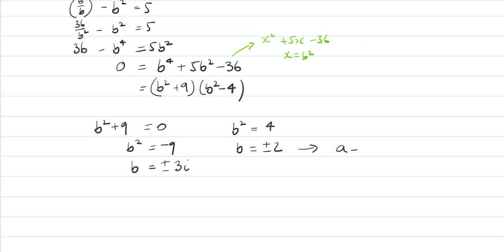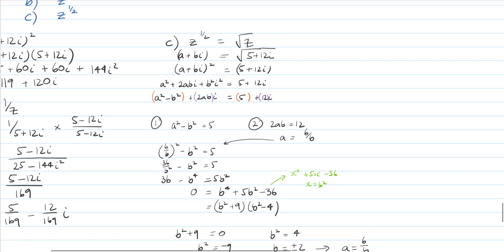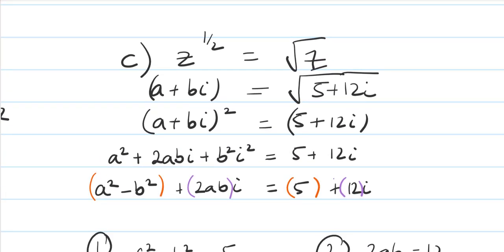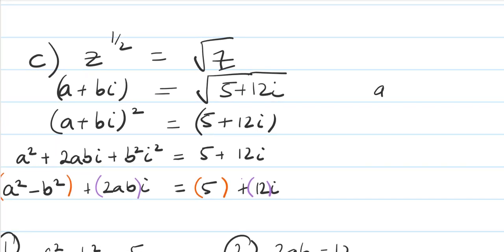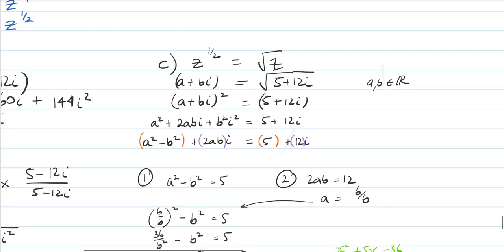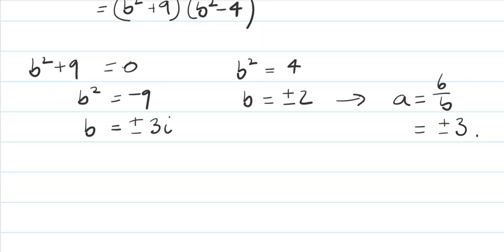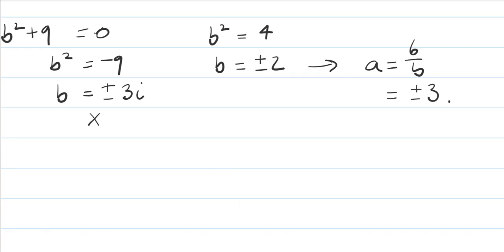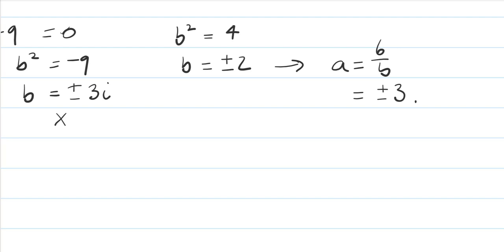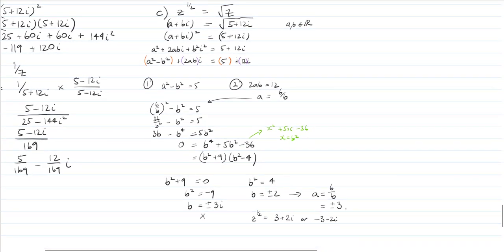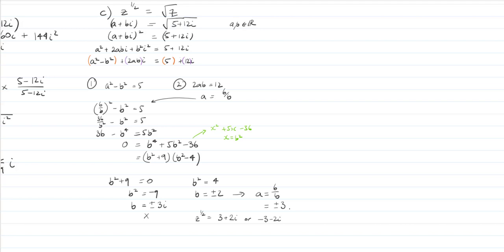Since a equals 6 over b, we get a equals plus or minus 3. We claimed at the start that the square root of z equals some complex number a plus bi where a and b are real. So either b equals positive 2 and a equals positive 3, giving z to the half equals 3 plus 2i, or b equals negative 2 and a equals negative 3, giving negative 3 minus 2i. It's a pretty hard problem — make sure you've got the rest of the arithmetic right first. That's the end of Video 2, all the best.